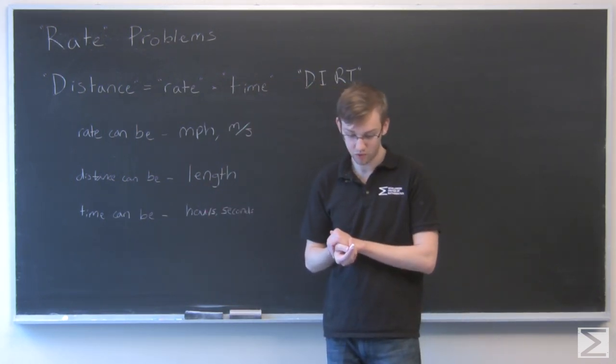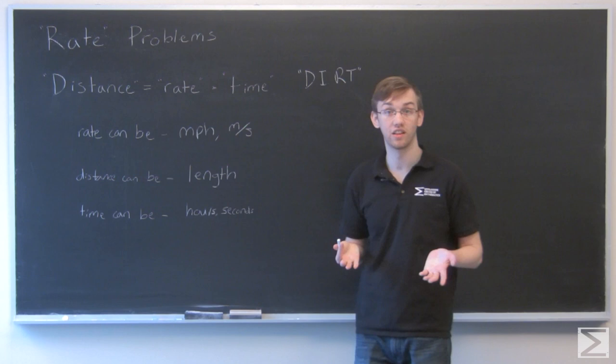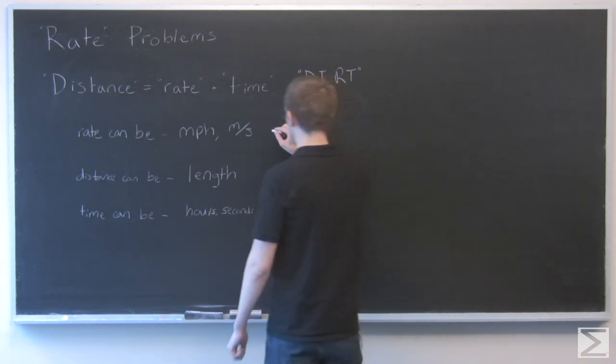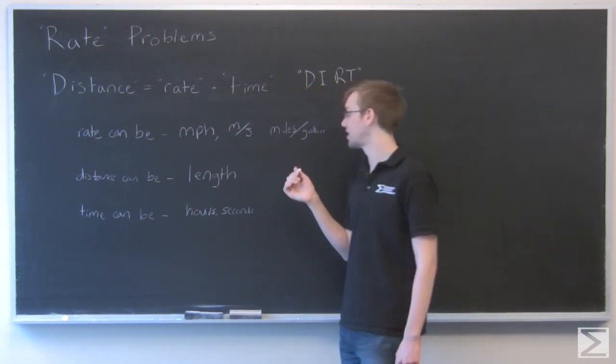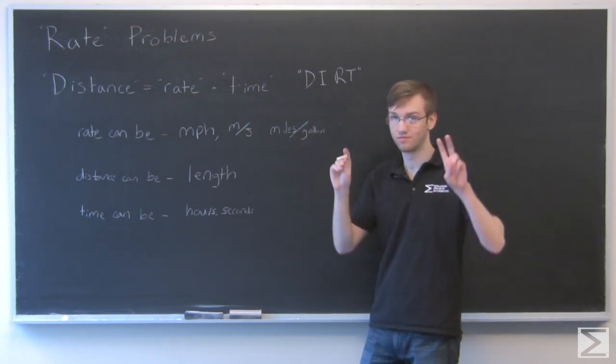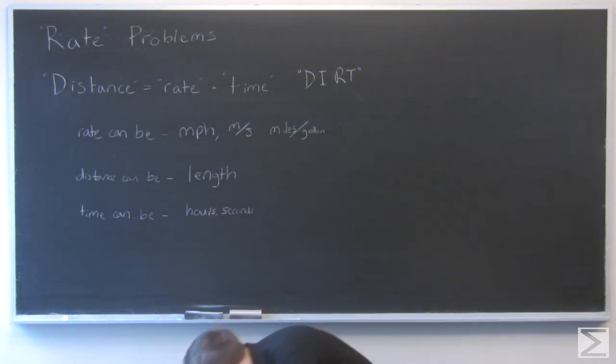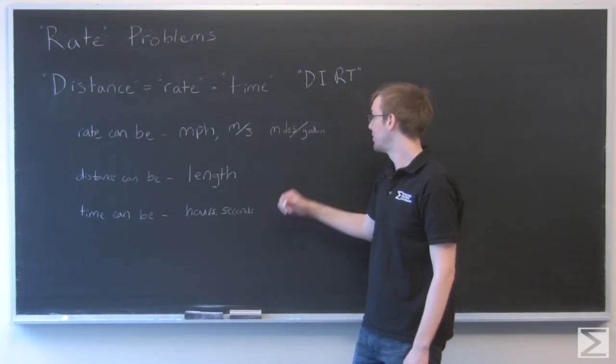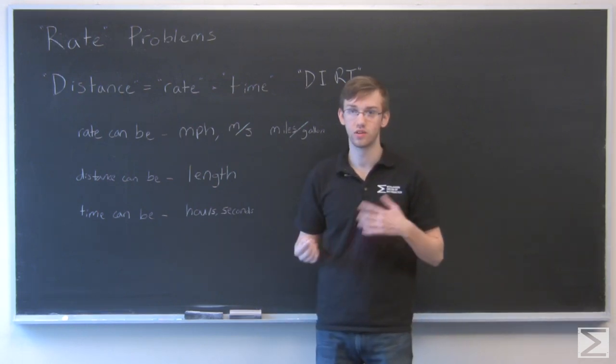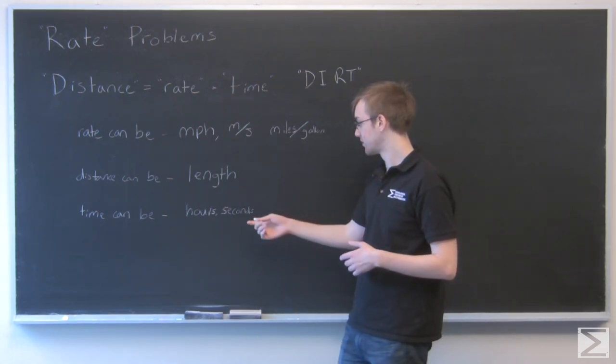Another example for a rate would be miles per gallon for a car. In this example, miles is again the distance. But in this case, time is actually gallons instead of a unit of time measurement.